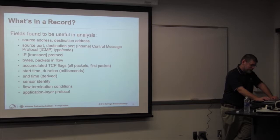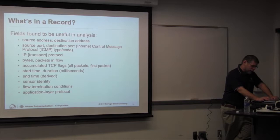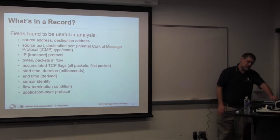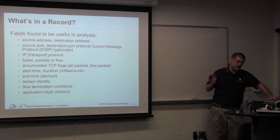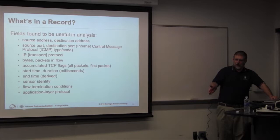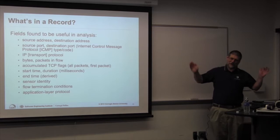You also get the sensor ID — useful if you have multiple sensors, e.g., the Charleston router vs. the San Diego router. You can also know how the flow terminated: a normal TCP fin or reset, or if a connection runs longer than the default 30-minute active timeout, the router will chop the flow and write it out.